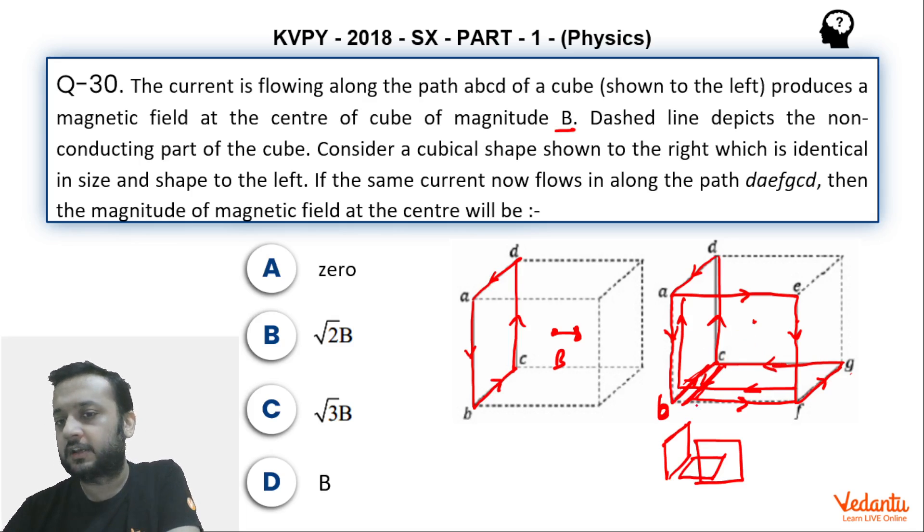And because of this jo neeche base pe hai, BFGC, BFGC uski wajah se magnetic field will be vertical, that is going up. Magnitude will be B. So we can say that these three squares will produce the same magnitude and in three mutually perpendicular axis.